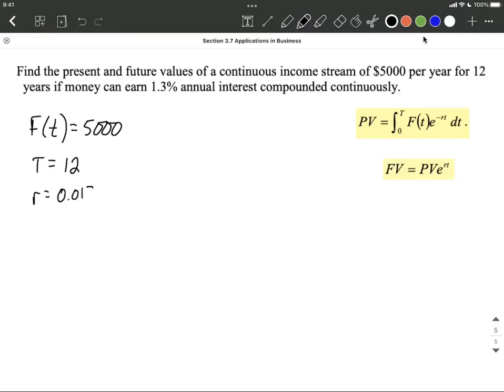Now I'm going to go ahead and make that into a decimal for our purposes. So two decimal places over. Alright, so our present value, PV, is going to be given by the integral from 0 to 12 of 5000 e raised to the negative 0.013 t dt power. So hopefully that makes sense where everything got filled in.